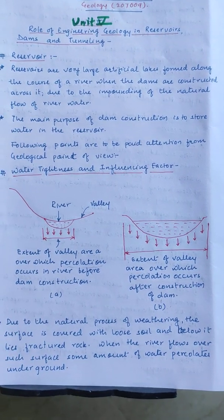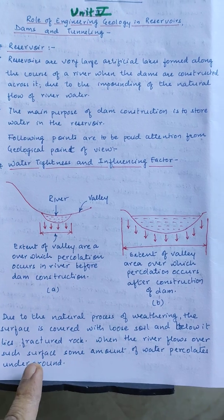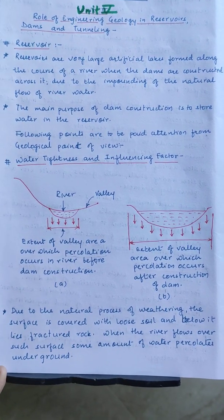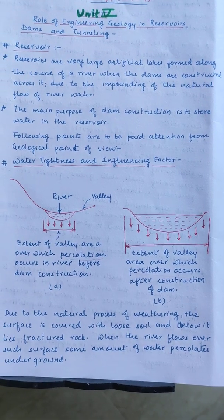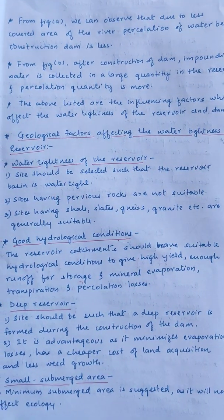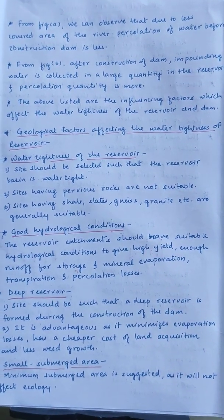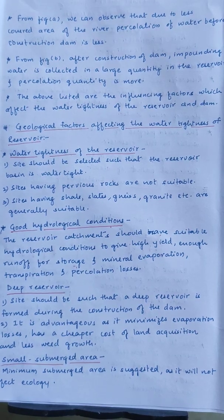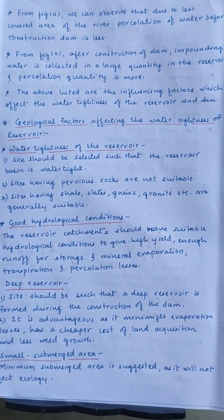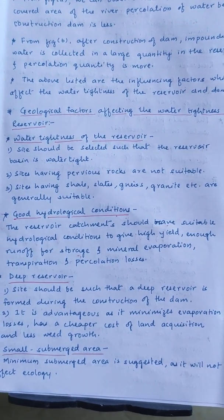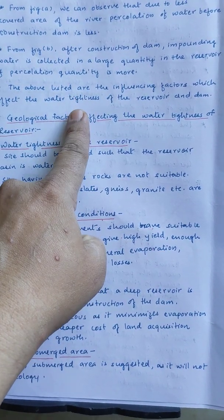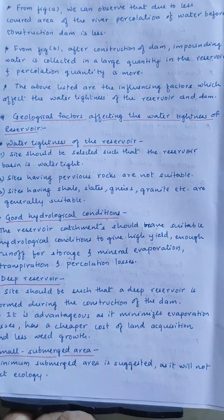Due to the natural process of weathering, the surface covered with loose soil and below which lies fractured rock is influenced by the flow of the river. When the river flows over such a surface, an amount of water percolates underground because of the permeability property of soil and rocks. From Figure A, due to less covered area, the percolation of water before construction of the dam is less. From Figure B, after construction of the dam, impounded water is collected in large quantity in the reservoir, but percolation quantity is more. These factors influence the water tightness of the reservoir and the dam.